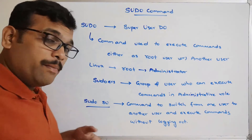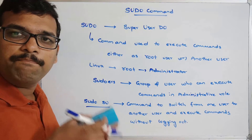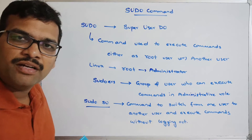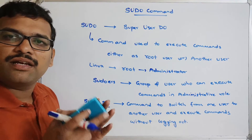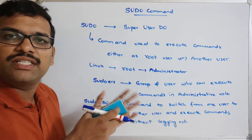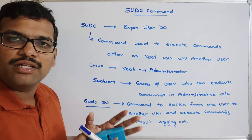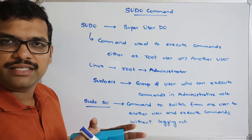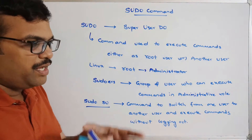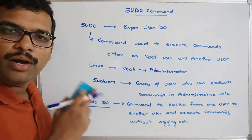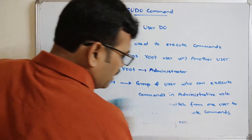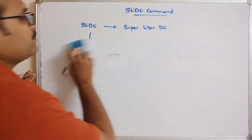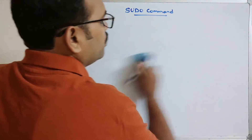The sudo command is also used to install or remove packages in Kali Linux. As discussed in previous sessions, Kali Linux supports hundreds of tools for hacking systems. Those tools can be installed using the sudo command. We'll see the command to install and the command to remove tools. The sudo command is used to: execute commands in an administrative role, switch from one user to another, and install or remove tools and packages.